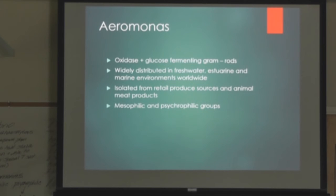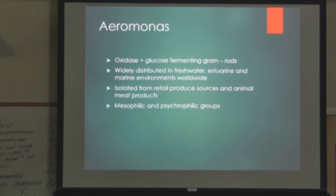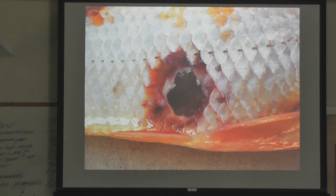Aeromonas is a little different — this organism can grow in any range from 4 to 42 degrees Celsius, so it's not temperature sensitive. It has mesophilic and psychrophilic groups. It's widely distributed water-wise, and animal and meat products can be a source. It's oxidase positive and glucose fermenting. The big thing here is its wide temperature range.